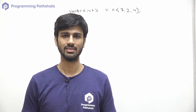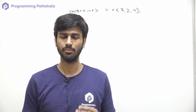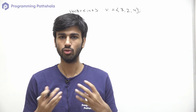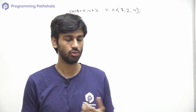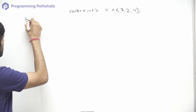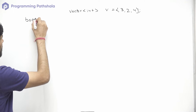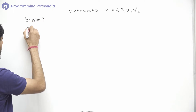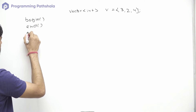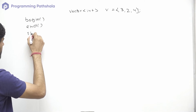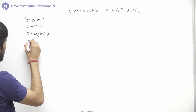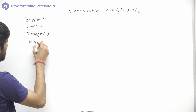Let us talk about iterators. We have majorly four iterators which are mostly used: begin, end, rbegin, and rend.